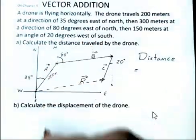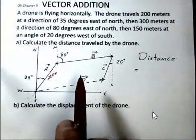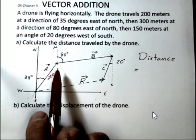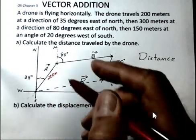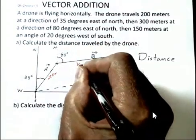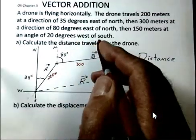Then we're at this position. At this position, the operator causes the drone to travel 300 meters at a direction of 80 degrees east of north.